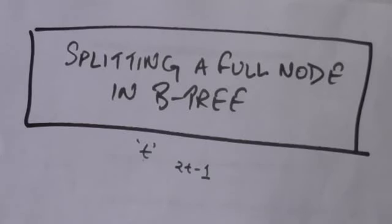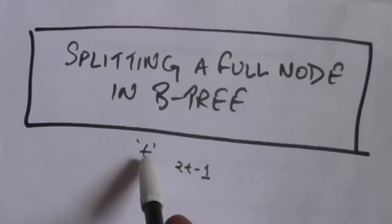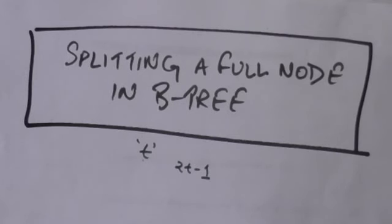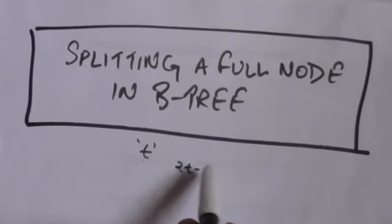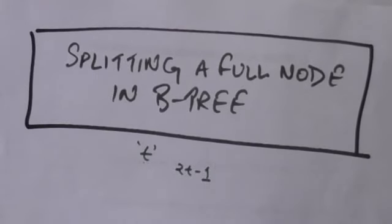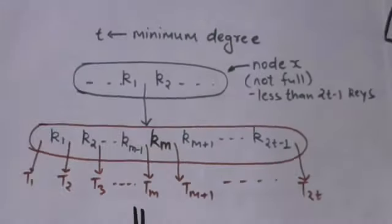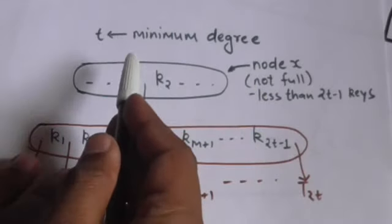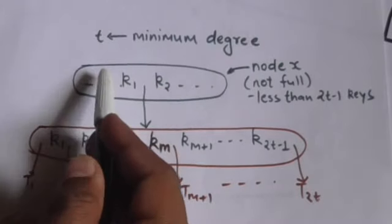Hello friends, welcome back. In this tutorial we will learn how we can split a full node in a B-tree. Suppose there is a B-tree with a minimum degree T. A node of that B-tree is said to be full if it contains exactly 2t minus 1 number of keys. Now suppose there is a non-full node X in that B-tree.